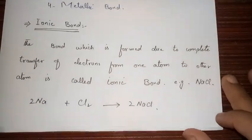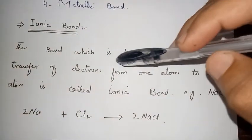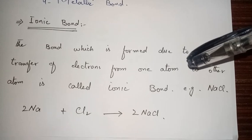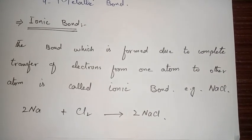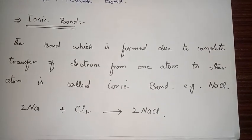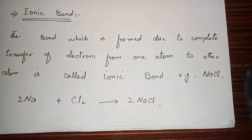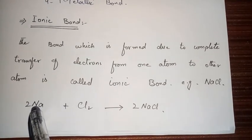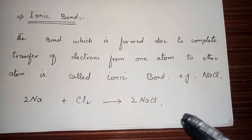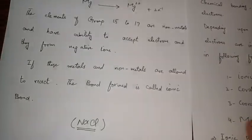The bond which is formed due to the complete transfer of an electron from one atom to another atom is called an ionic bond. For example, in NaCl (sodium chloride), one electron is transferred from the sodium atom to the chlorine atom, and the resulting compound is sodium chloride.